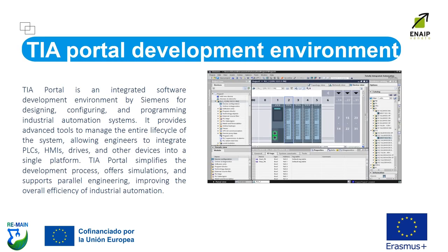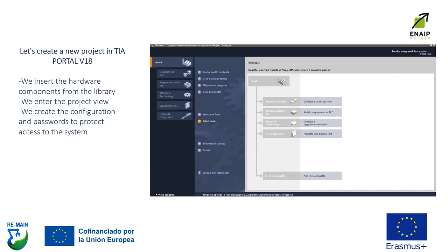TIA Portal development environment. TIA Portal is an integrated software development environment by Siemens for designing, configuring, and programming industrial automation systems. It provides advanced tools to manage the entire lifecycle of the system, allowing engineers to integrate PLCs, HMIs, drives, and other devices into a single platform. TIA Portal simplifies the development process, offers simulations, and supports parallel engineering, improving the overall efficiency of industrial automation.